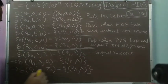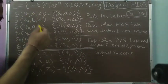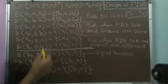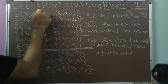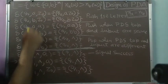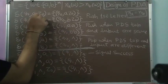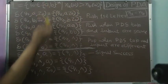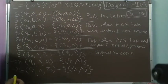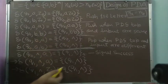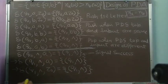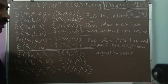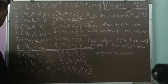Now if you test the null string, in state q0 with z0 on top there is no transition delta(q0, null, z0) defined, so the null string is rejected — only the required strings are accepted. This is the complete solution for the first problem where the number of a's is greater than the number of b's.